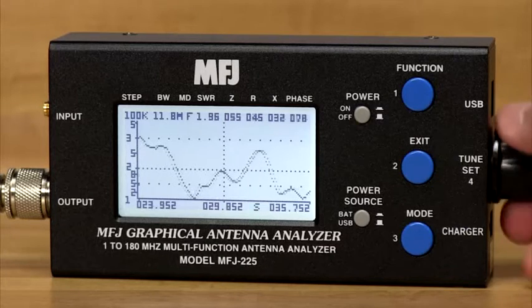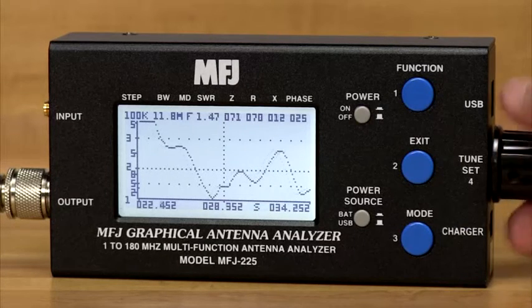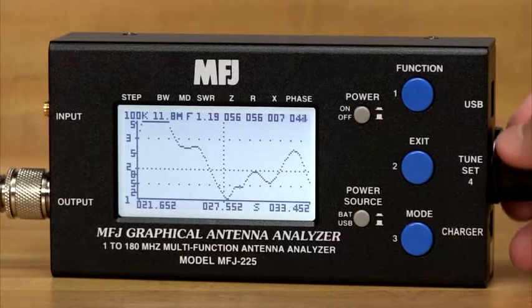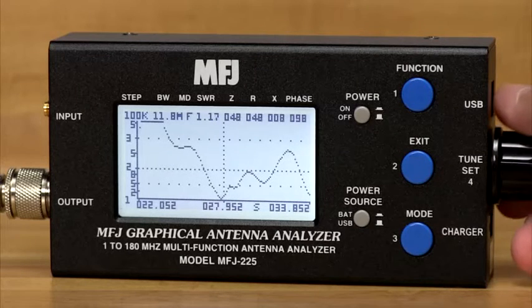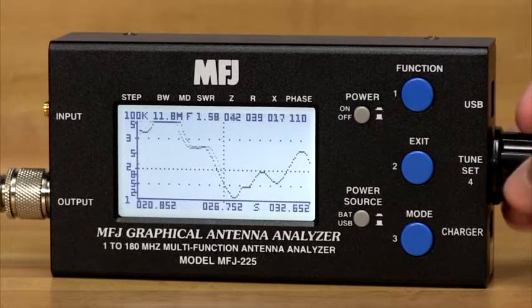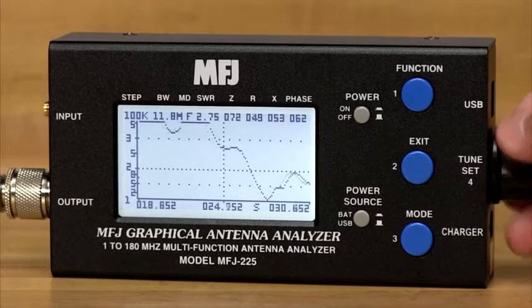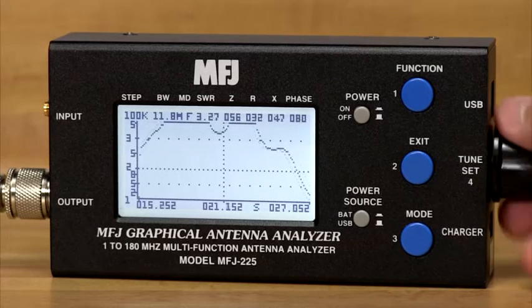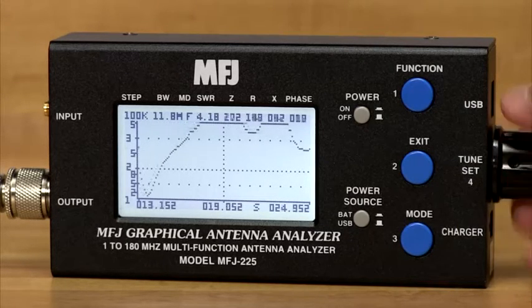The MFJ-225 tunes continuously from 1.5 to 179.9 MHz with rock-solid stability and no gaps. The VFO is a state-of-the-art, programmable, direct digital synthesis generator with pinpoint 1 kHz frequency resolution.